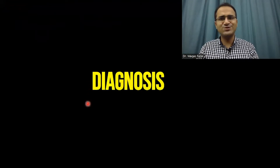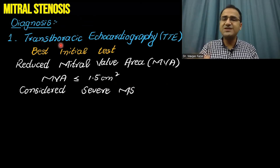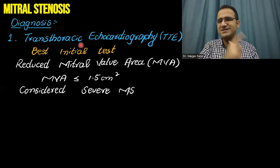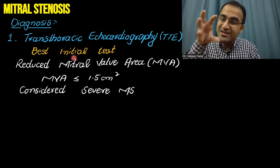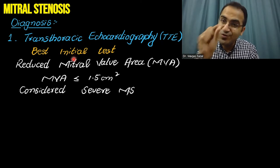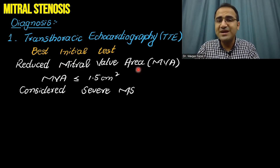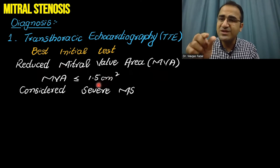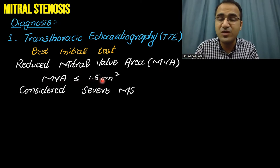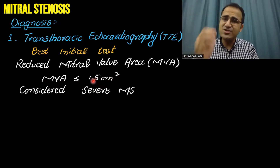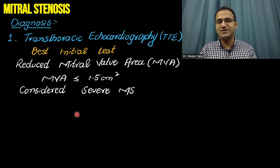Coming to the diagnosis of mitral stenosis: echocardiography — transthoracic echocardiography — is the best initial test. In echocardiography, you look at the heart, look at the valves, and assess the level of stenosis. Reduced mitral valve area: mitral valve circumference less than 1.5 cm² is diagnostic for mitral stenosis and is considered severe mitral stenosis.